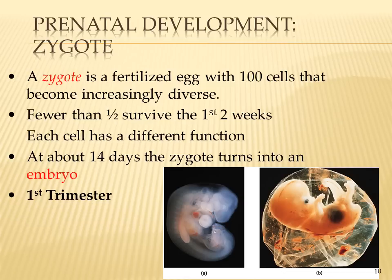As the zygote reproduces, each new cell develops a different function. At about 14 days, the zygote transitions into an embryo — all occurring within the first trimester.